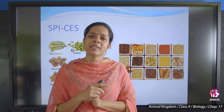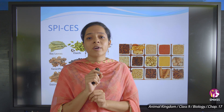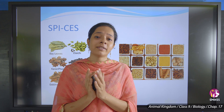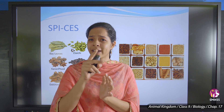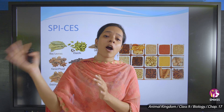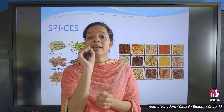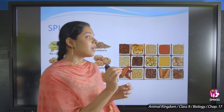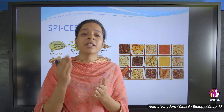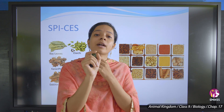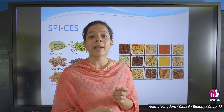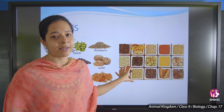Let us not confuse between species and spices. Everyone may have pronunciation difficulty and say species as spices. Species refers to living organisms, while spices are things we eat, like garlic, jeera, and cardamom. Let us not get confused between species and spices.